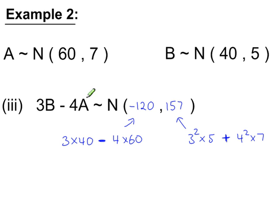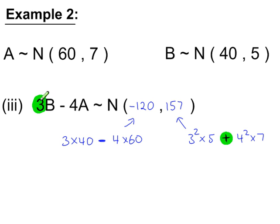For 3b minus 4a: the mean is 3 times the mean of b, minus 4 times the mean of a, giving minus 120. For the variances, we always add. So it's 3 squared times the variance for b, plus 4 squared times the variance for a.